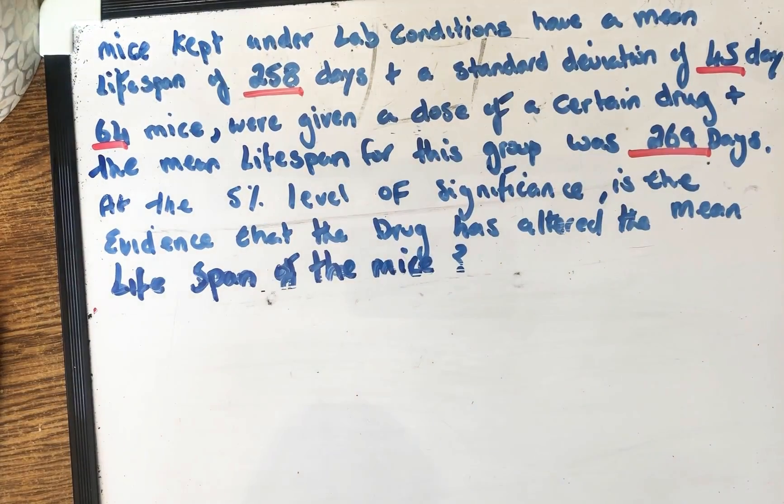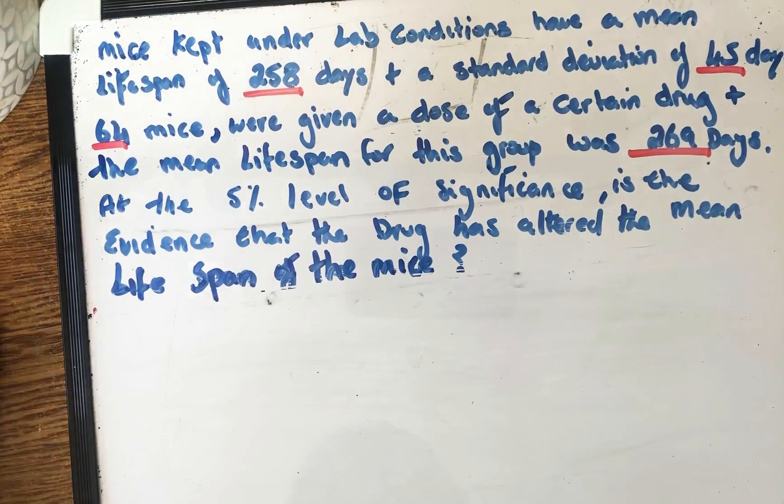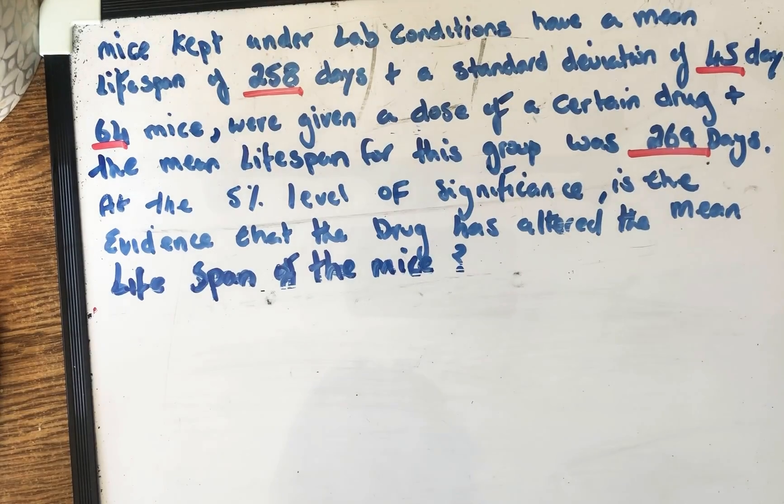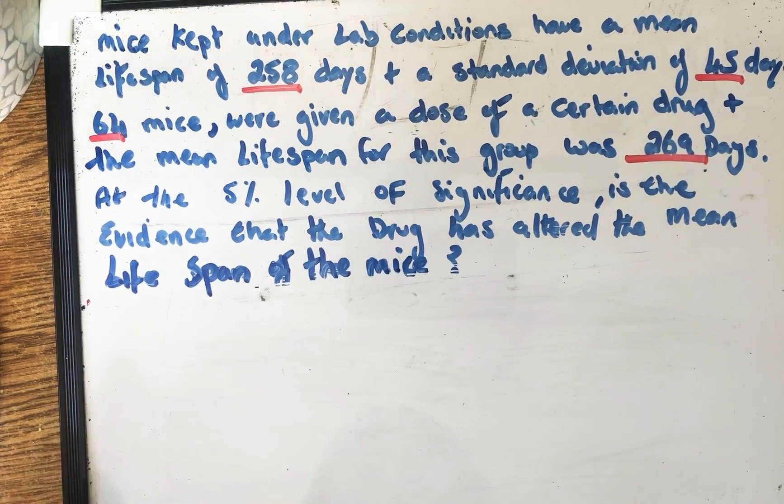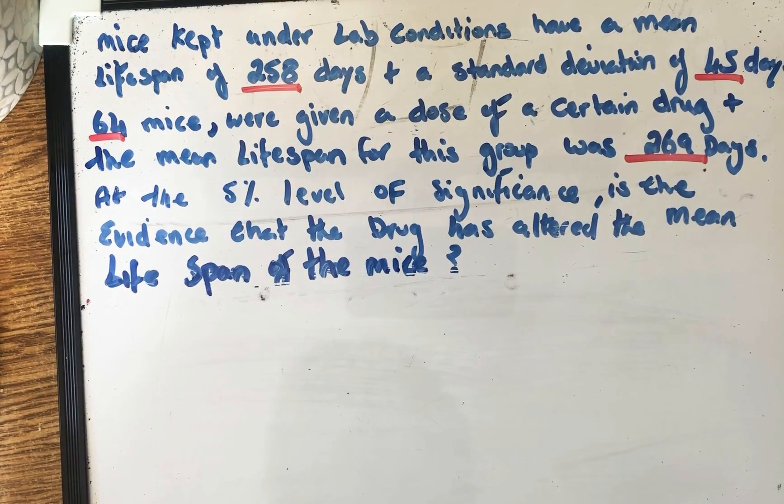Mice are kept under laboratory conditions and have a mean lifespan of 258 days and a standard deviation of 45 days. 64 mice were given a dose of a certain drug and the mean lifespan for this group was now 269 days.